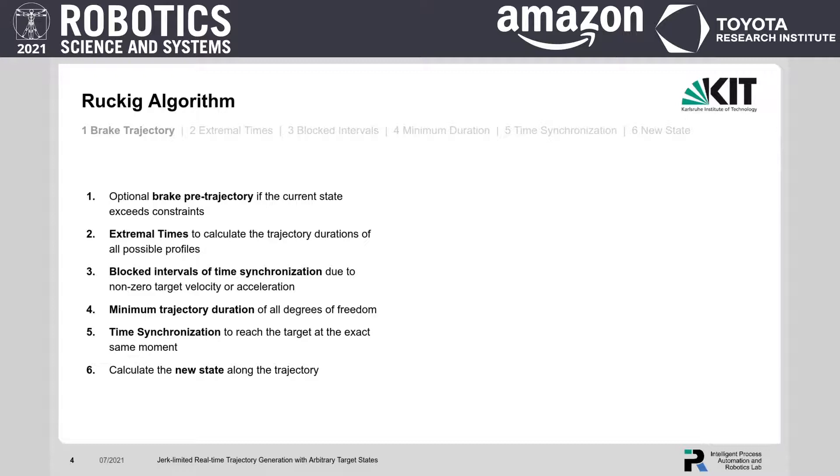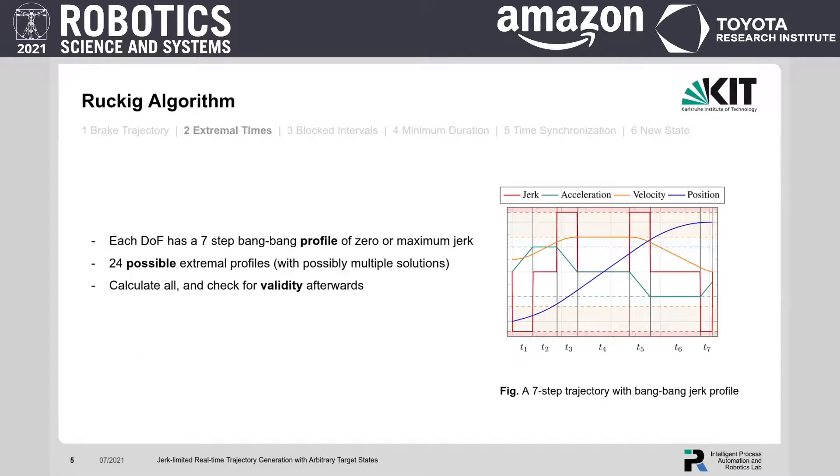Second, we introduce the concept of extremal profiles. In particular, we show that every time optimal profile has seven steps of a so-called bang-bang profile with maximum, zero or minimum constant jerk. Given the constraints, there are 24 possible extremal profiles in total.